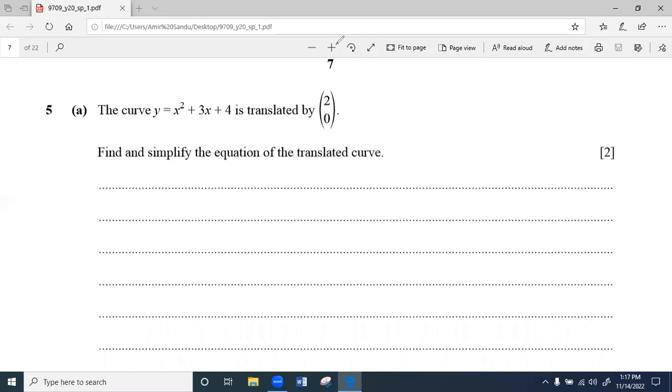Question number 5, Part A. Original curve is y equals x square plus 3x plus 4. Translation vector is given, that is (2, 0).